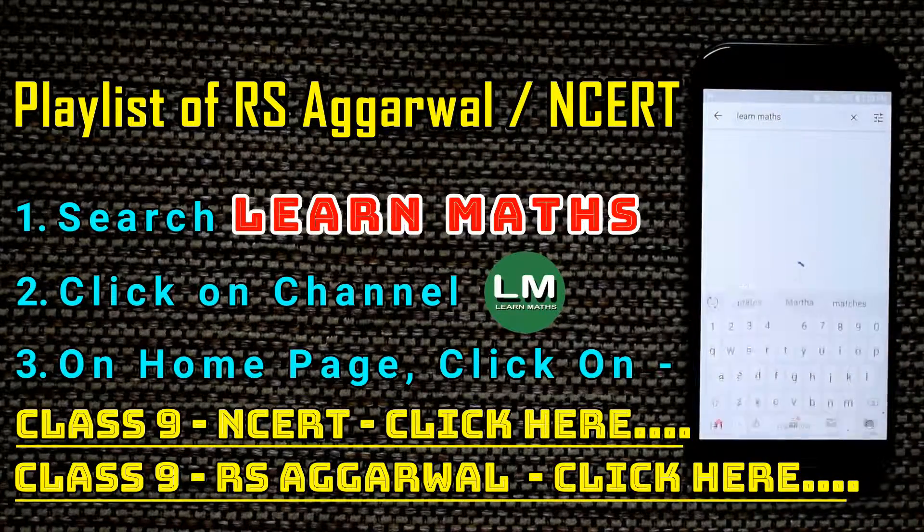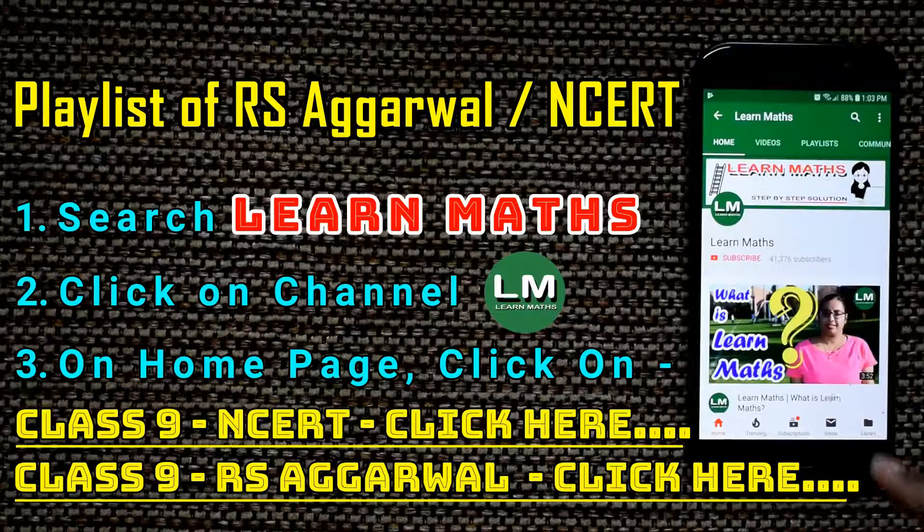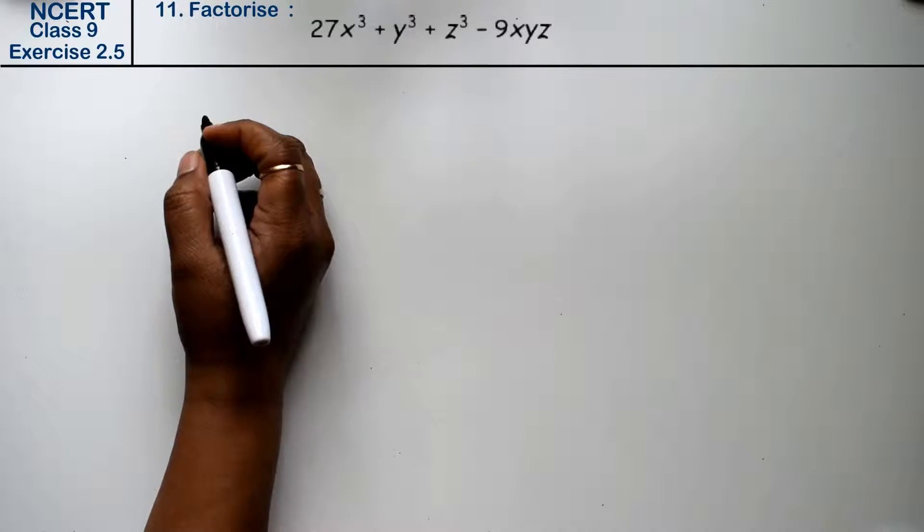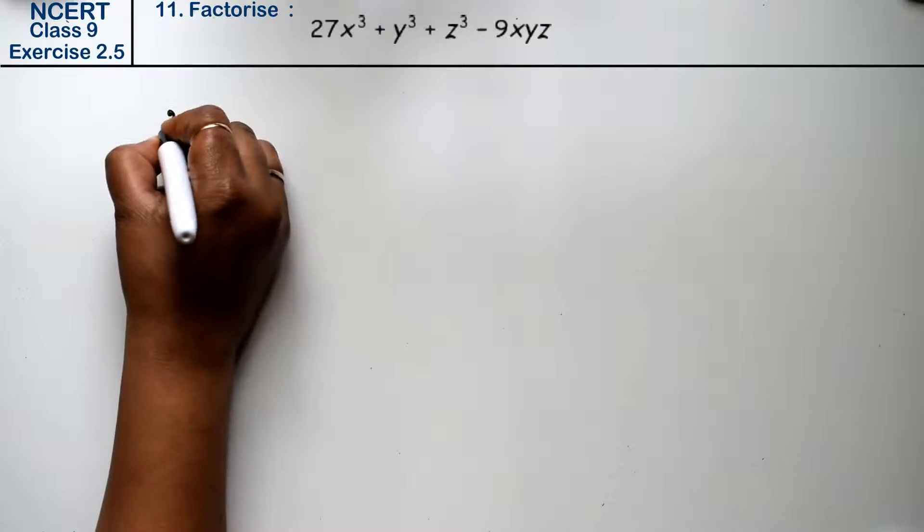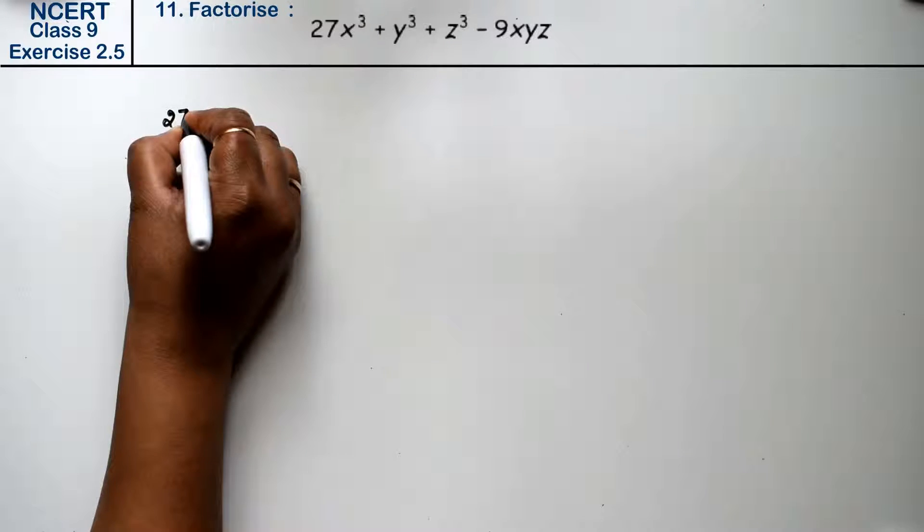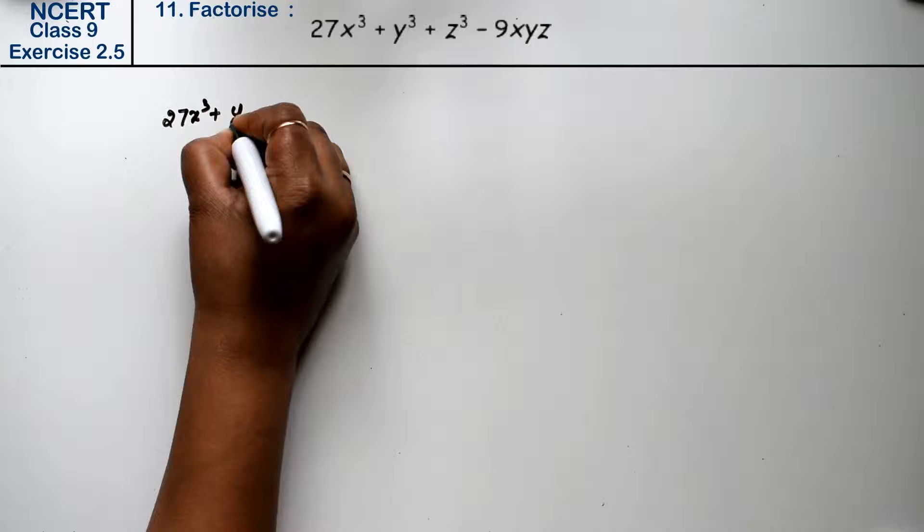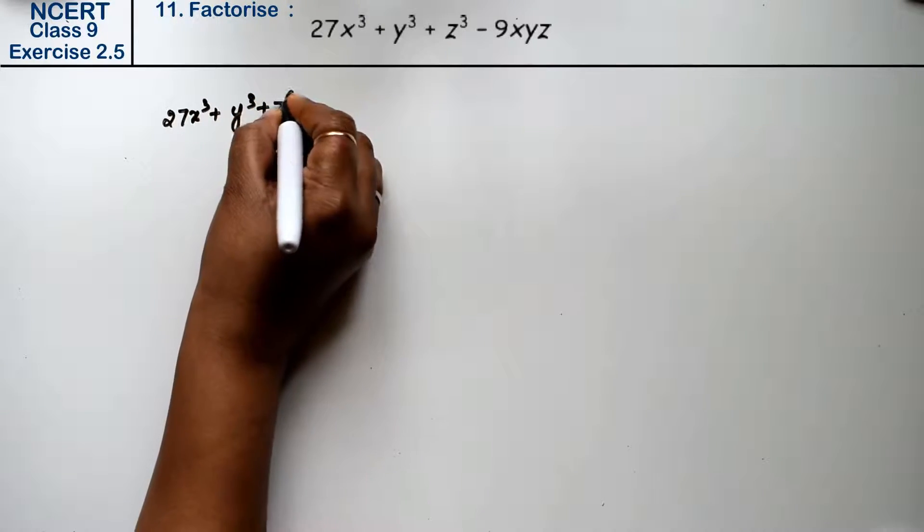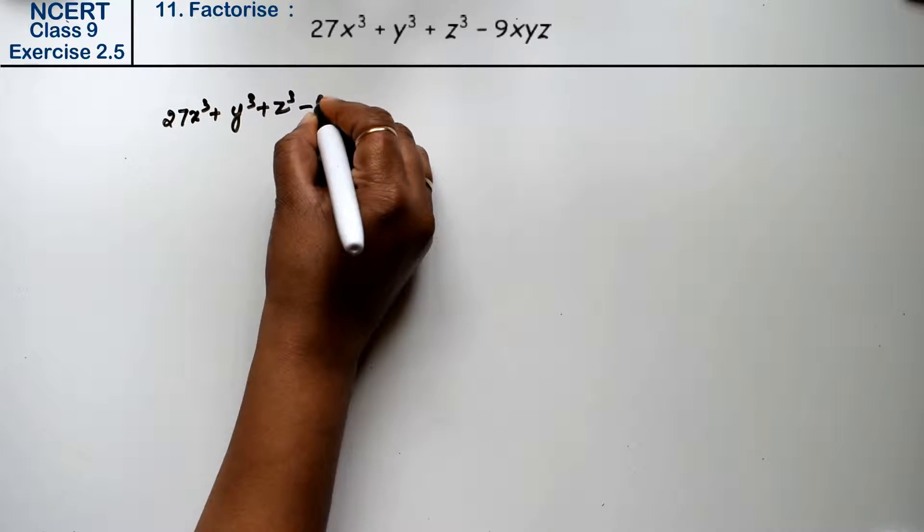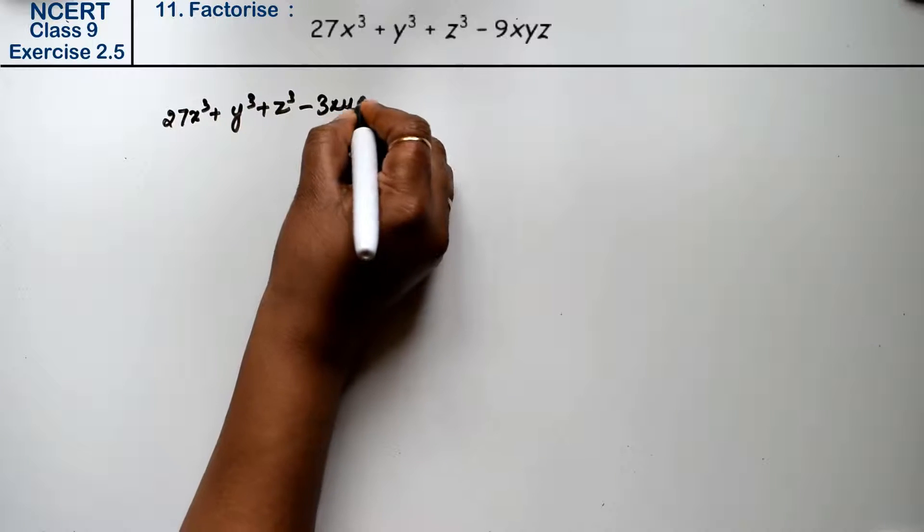Let's do question number 11 of exercise 2.5. The question is to factorize 27x³ + y³ + z³ - 3xyz.